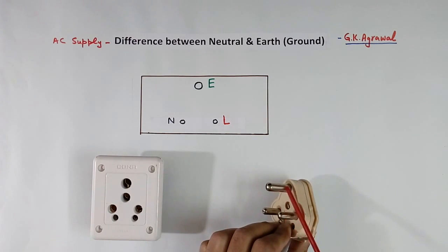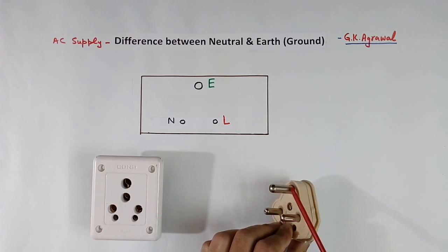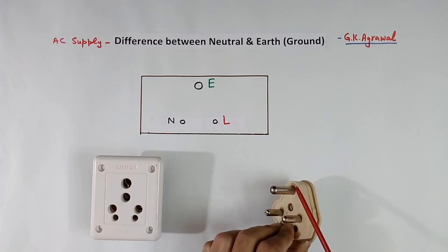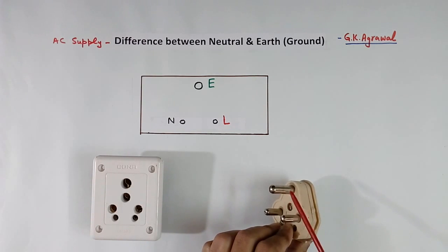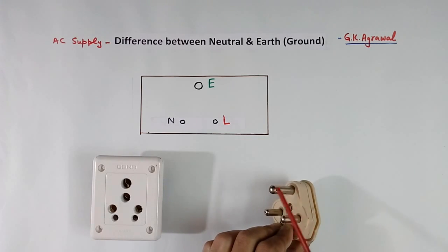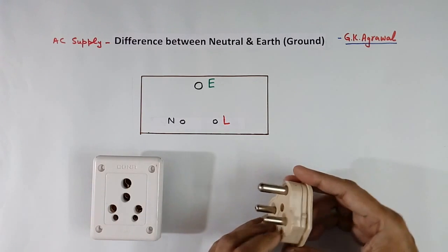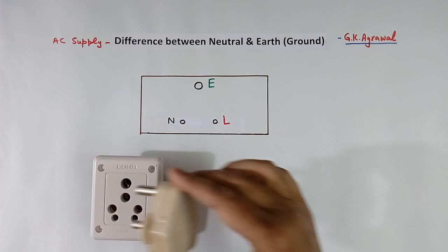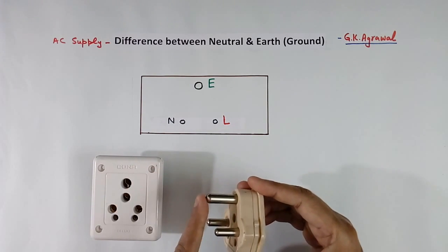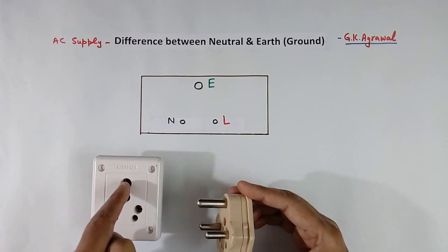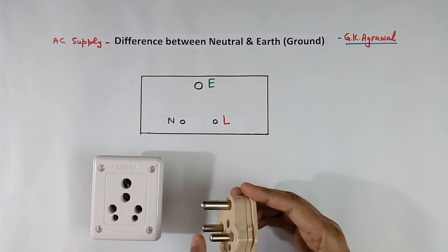The earth pin is thicker and longer. It is thick because the earth wire used will always be thick, to reduce the resistance. It is longer because if you connect this plug in the socket, the earth connection should be made first, then only line and neutral — for safety.